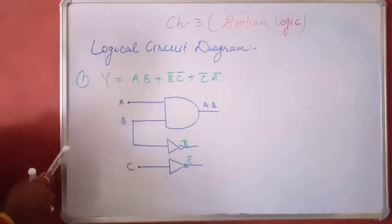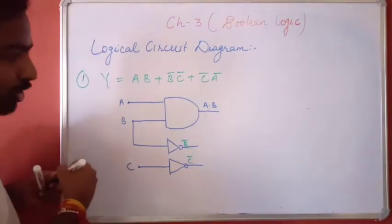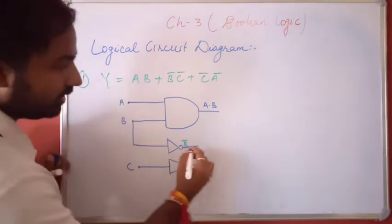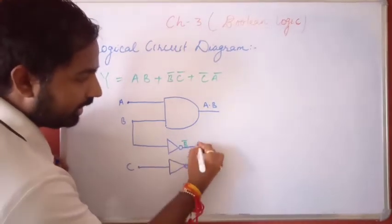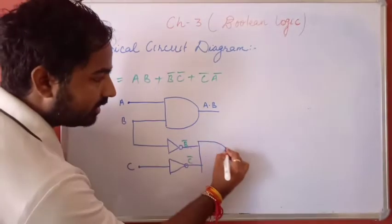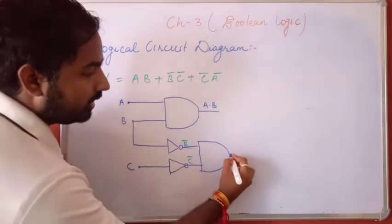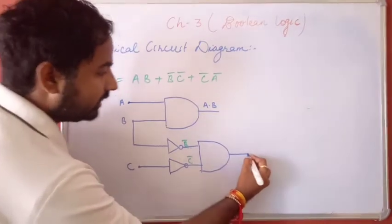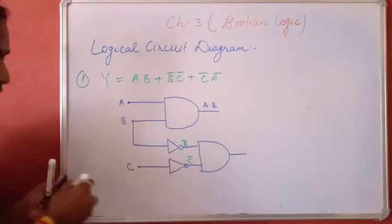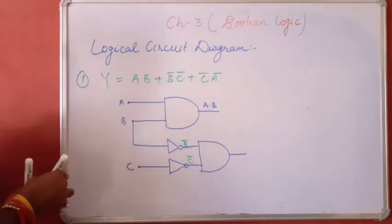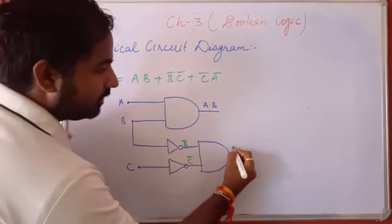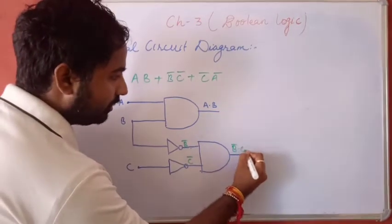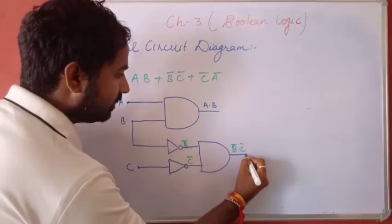This is C, this is C̄. In B̄C̄, again AND operation is there, so we have to implement an AND gate. The output of this is B̄·C̄.